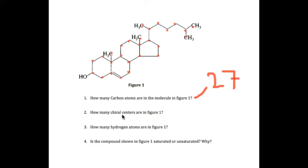Alright, how many chiral centers are in figure one? Alright, so basically a chiral center is a carbon that is connected to four different atoms.